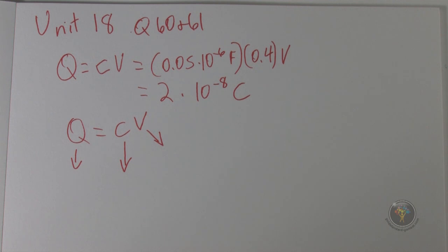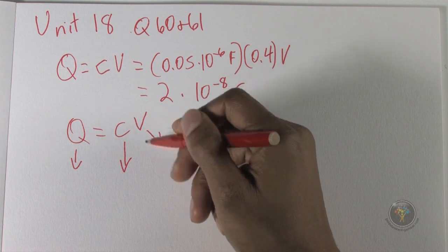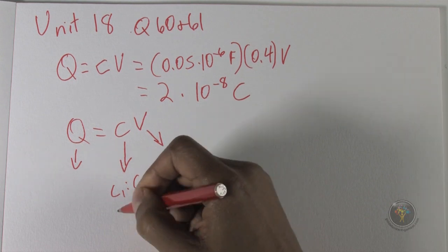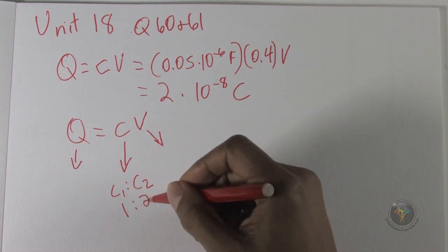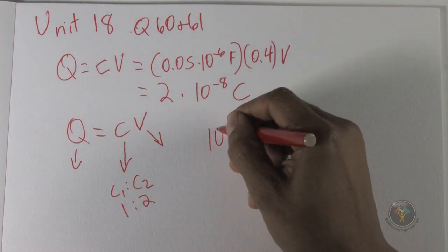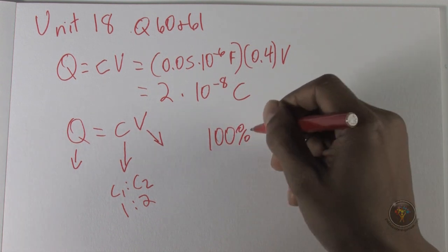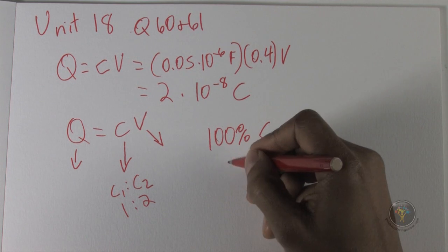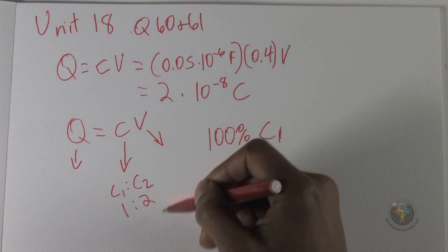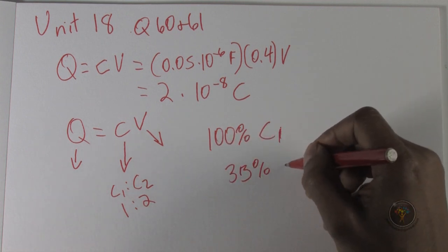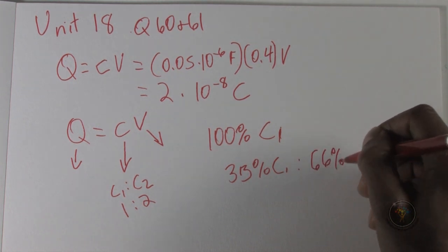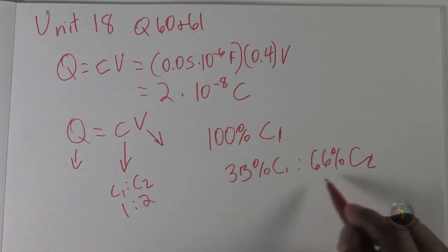So this is not going to be shared equally between C1 and C2. In fact, C2 has twice the capacitance of C1, and this is how it will be distributed. So it used to be 100% of the current stored with C1, but now it's 33%, one in a total of three, 33% with C1, and it's going to be 66% with C2.